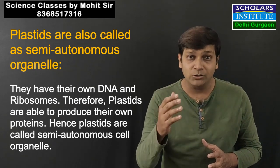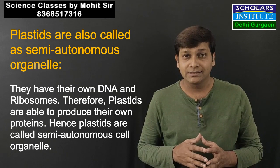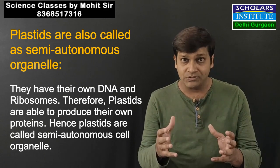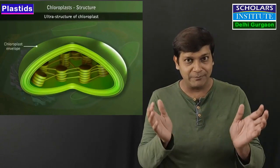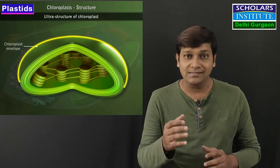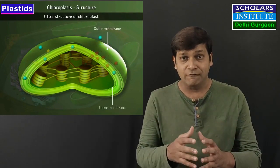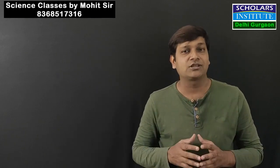Just like mitochondria, plastids have their own DNA and their own ribosomes. Because of this, plastids can produce many types of proteins, enzymes, and different molecules for themselves. Structurally, plastids are double membrane cell organelles. The outer membrane of plastids is porous, whereas the inner membrane is highly folded. This inner membrane provides the surface for various reactions taking place in the plastids.